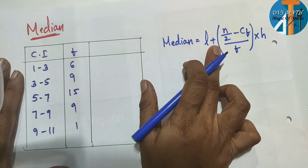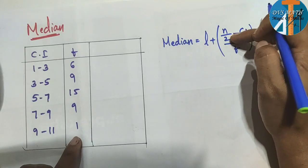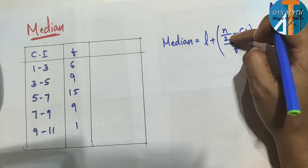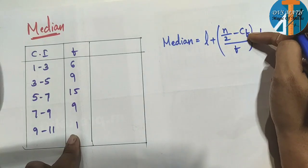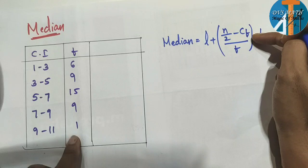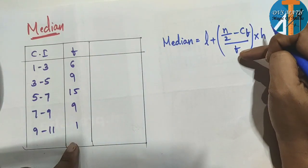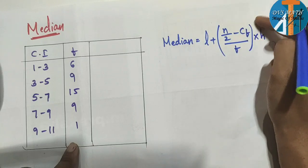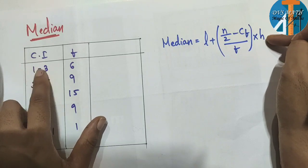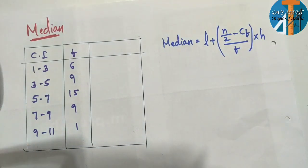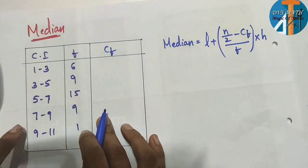Please practice the formula. Here L is the lower limit, N/2 is half of σf, Cf is the cumulative frequency, F is the frequency of the median class, and H is the class size.